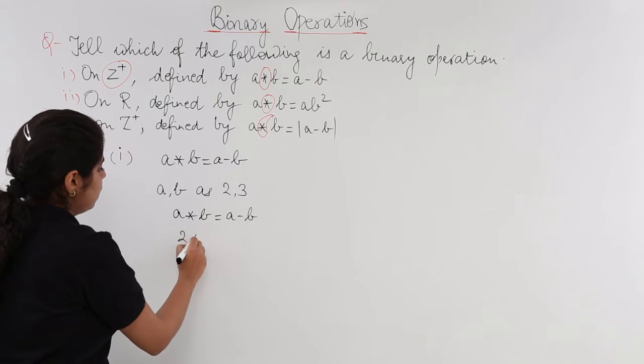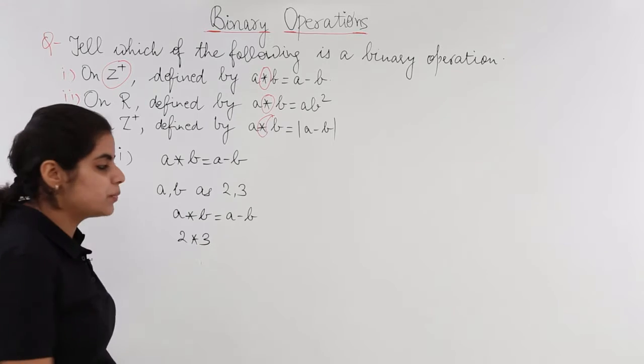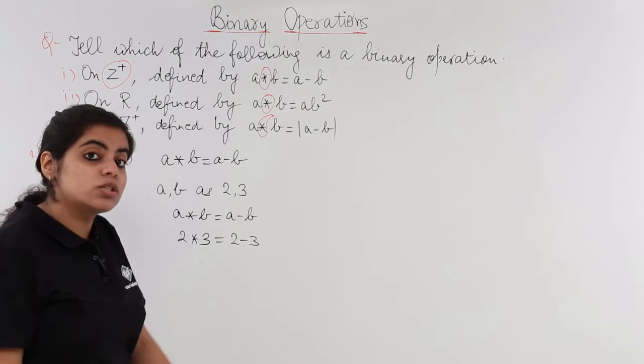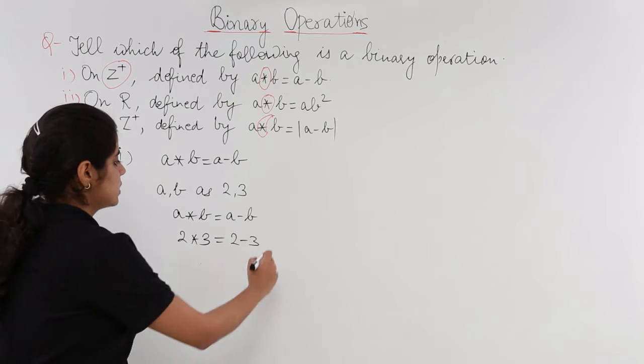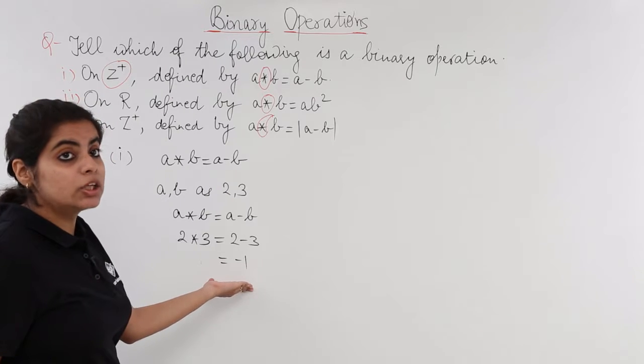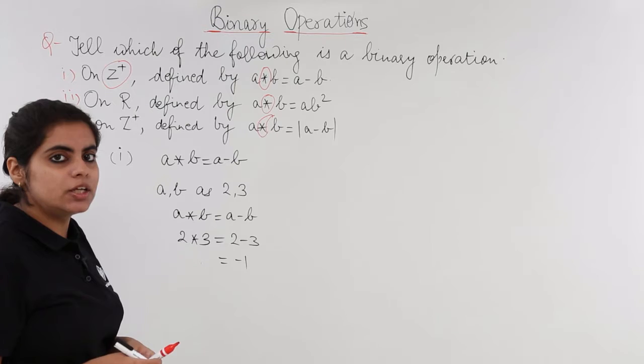Suppose A and B are given to me as 2 and 3. Now A star B is equal to A minus B. This is the question. Nothing can be changed. And if 2 is my A, 3 is my B, what happens? 2 star 3 is equal to 2 minus 3. And what is 2 minus 3? 2 minus 3 is minus 1. Now is minus 1 belonging to Z positive? Is it a positive integer? No.